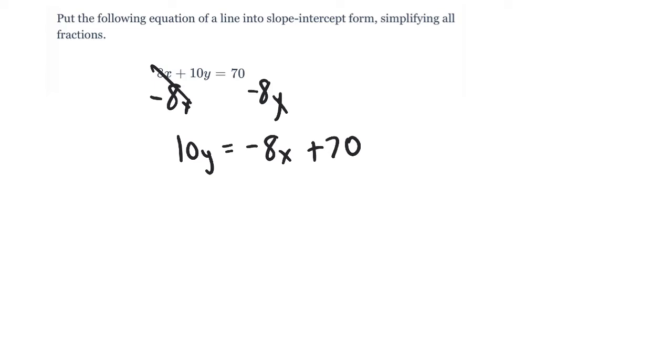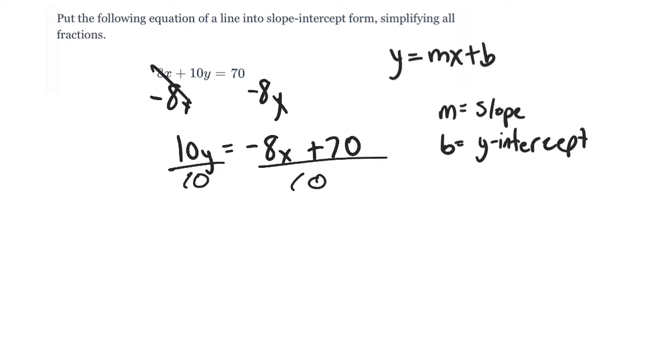In case you forgot what slope intercept form is, slope intercept form is y equals mx plus b where m is your slope and b is your y-intercept. This should be review. Now I gotta divide by 10 to get the y by itself, so I gotta divide each side by 10. I'm gonna be left with negative 8 over 10 x plus 70 divided by 10. That's just to show you that every term on each side gets divided by 10, not just one or the other. Now I'm gonna reduce my fractions. Negative 8 over 10 reduces down to negative 4 over 5, and then 70 divided by 10 is 7.